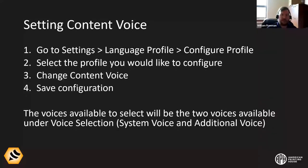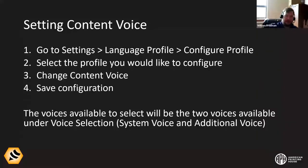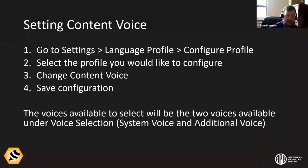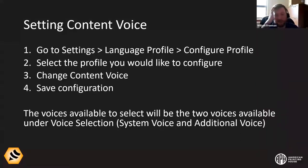For the content voice, you can only choose between the voices you've already set under voice selection. So if you want Rosa as your content voice, set it first under voice selection, then go to settings, language profile, configure profile, go down to 'change content voice,' pick between the available options, and then select 'save configuration.' Most people will be fine with the defaults. If you run into trouble, feel free to reach out — I'll put my email in the chat: wfreeman@aph.org.